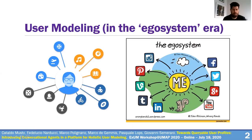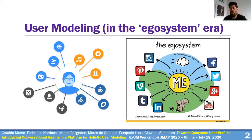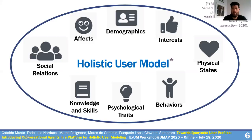In this presentation we will mainly talk about user modeling, and in particular user modeling in the ecosystem era. The main idea behind the so-called ecosystem is that a profile of a user can be built by acquiring and aggregating personal data spread across social networks such as YouTube, Facebook, Twitter, and LinkedIn. In our previous work, recently published in the User Modeling and User Adapted Interaction journal this year, we introduced our holistic user modeling strategy.